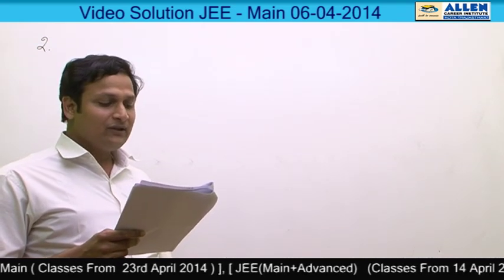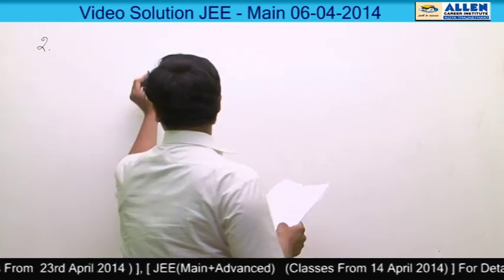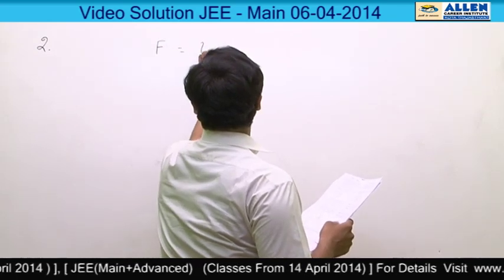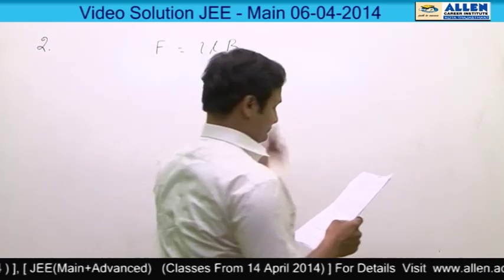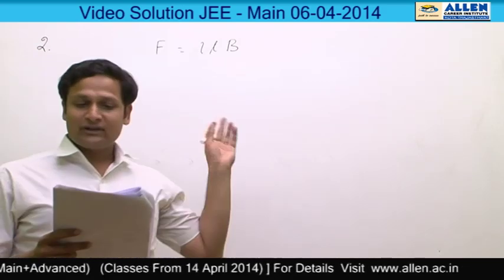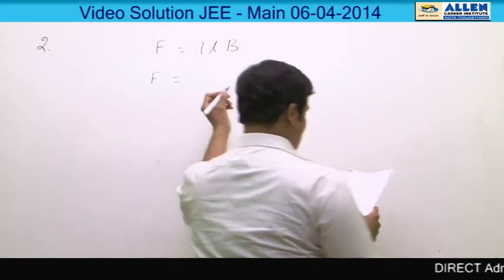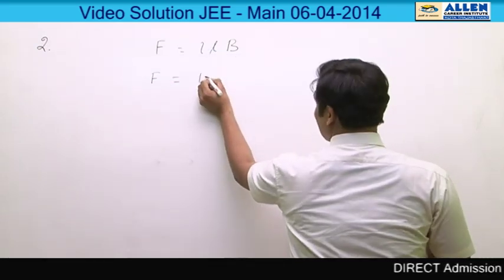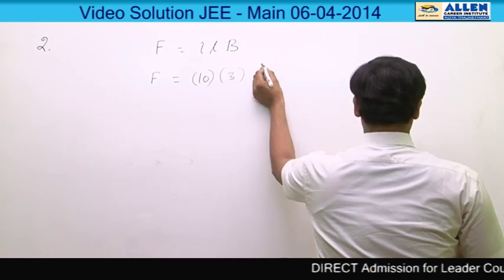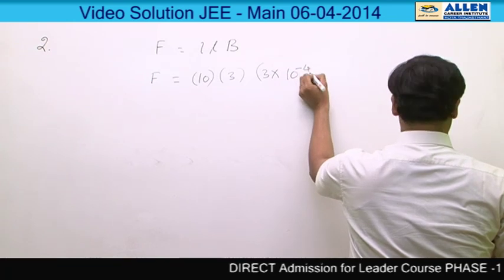In this wire we will have a magnetic force F equal to I·L×B. After putting the values: current is 10 ampere, length is 3 meter, and B is given as 3×10⁻⁴ times e to the power −0.2X.